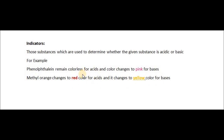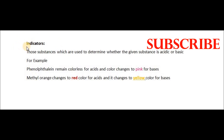If the solution is acidic, the color of methyl orange will change to red, and it will change to yellow for basic solutions. To determine whether a substance is acidic or basic, we use substances called acid-base indicators, or simply indicators. Examples include phenolphthalein and methyl orange.